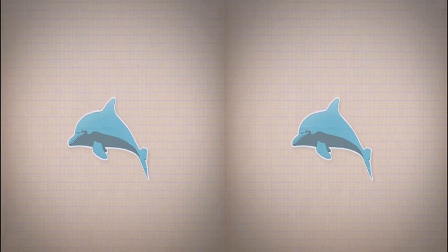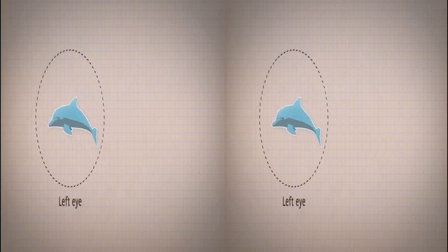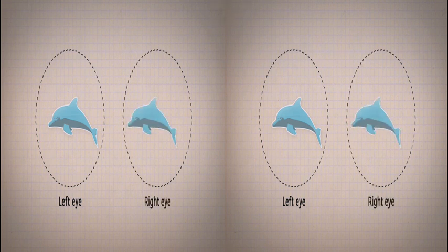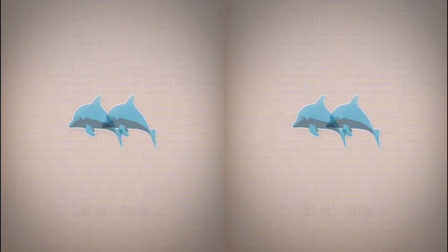Human sight has evolved in stereo. Our left eye sees from one perspective and our right eye sees something slightly different. Our brain uses the differences between what the eyes see to give us a sense of depth.